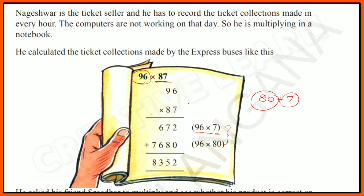First, 96 × 7: 7 × 6 = 42, write 2 in the ones place and carry 4. Then 7 × 9 = 63, plus carry 4 = 67. So 96 × 7 = 672.